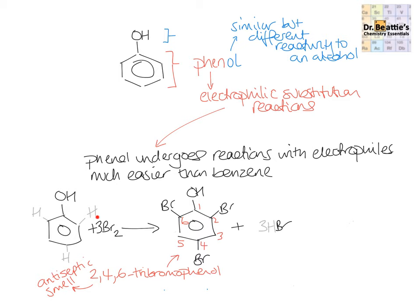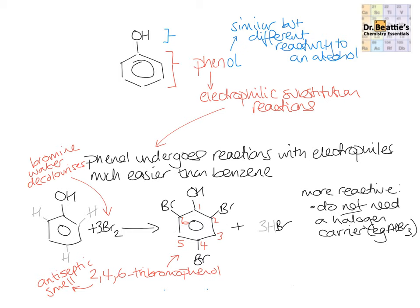Because we're using bromine water — an orange-red solution — it gets used up in the bromination to form this product, and so it gets decolorized. That's another observation to be aware of. This all links back to phenol undergoing reactions with electrophiles much more easily than benzene: we didn't need a halogen carrier, and we end up with tri-substitution. Phenol is so reactive it happily forms three new bonds with bromine and substitutes out those hydrogens, whereas benzene will only do this to form a mono-substituted product.